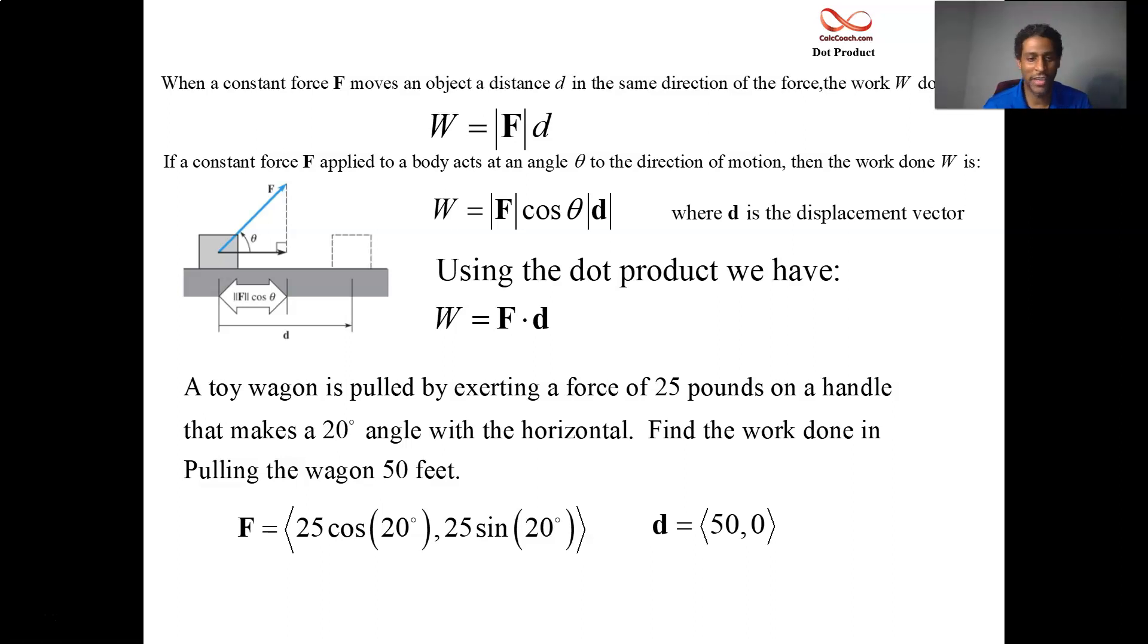So just do the dot product between these two vectors and you'll have the work. And you'll see that from the formula we'll have 50 times 25 times the cosine of 20 degrees. The other guy gets multiplied by zero, the sine of 20. And that's it. That's the expression for it.